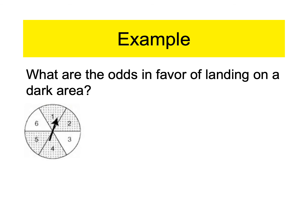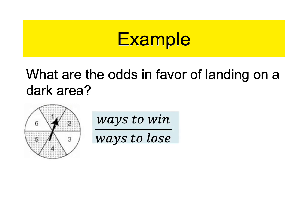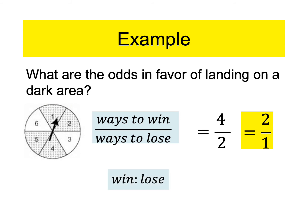Here's the spinner game. There are six numbers, some white areas and some dark areas. The question asks: what are the odds in favor of landing on a dark area? Odds in favor are ways to win over ways to lose. How many sections are dark? There are four dark sections — that's how you win. How many white areas? There are two. If this were probability, it would be four over six. But for odds, four over two reduces to two over one. In colon form, that's two to one odds in favor.